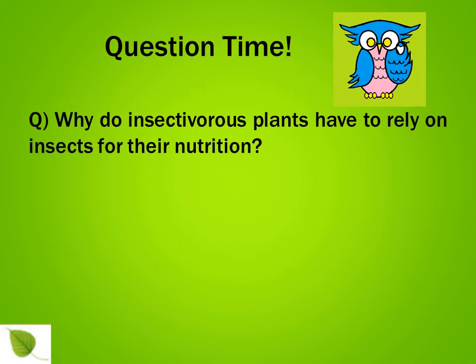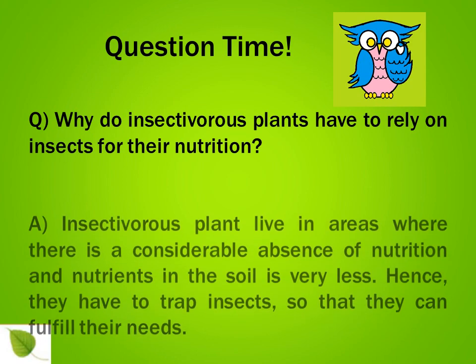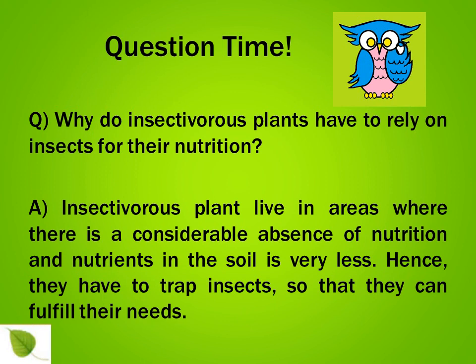Question time. Why do insectivorous plants have to rely on insects for their nutrition? Insectivorous plants live in areas where there is a considerable absence of nutrition and nutrients in the soil are very less. Hence, they have to trap insects so that they can fulfill their needs.